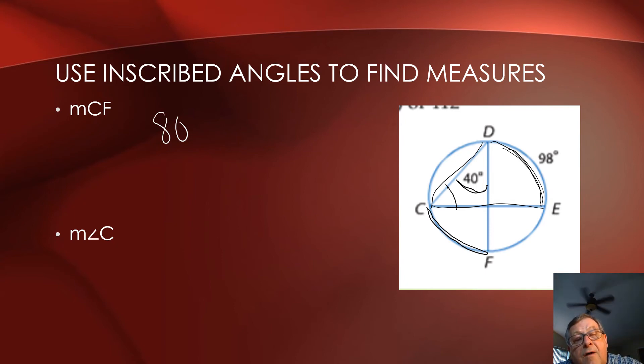Well, the measure of angle C is one half the cord DE, and cord DE is 98. And one half of 98 or the measure of angle C, let's see. Let's see. Two into nine goes four times. One left over, two into 18 is nine. And so this angle C then is 49 degrees using the inscribed angle theorem.